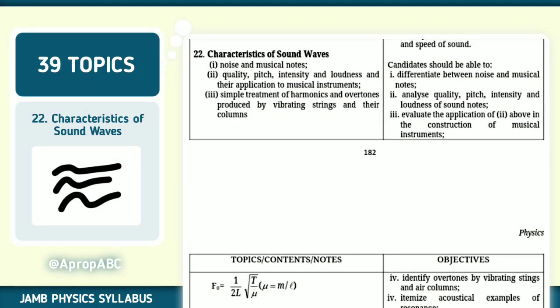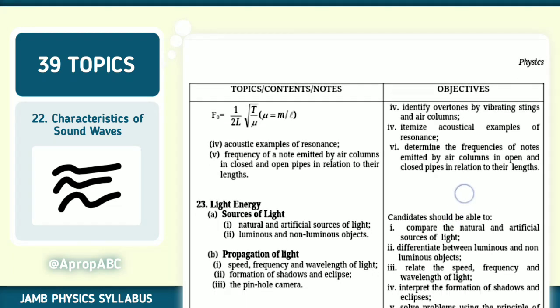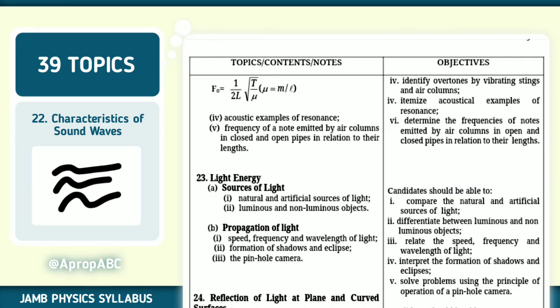Number 22 of 39, we have characteristics of sound waves. Noise, musical notes, quality, pitch, intensity, loudness. Can you tell the difference between noise and musical notes? The quality, the pitch, the intensity, the loudness. The application of musical instruments and how you could get something meaningful from it. Make sure that you note that properly. Acoustic examples of resonance. Frequency of a note emitted by air columns - closed and open pipe. Note this particular one very, very well.